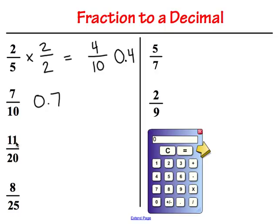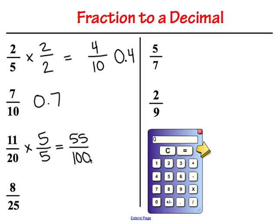Next: 11 twentieths. What can we multiply 20 by to get a 100 in our denominator? We know that 20 times 5 is 100. So if we multiply by 5 in both the denominator and the numerator, our new equivalent fraction is 55 hundredths — 11 times 5 is 55, and 20 times 5 is 100. We just need to say the fraction to write it as a decimal: 0.55, or 55 hundredths.